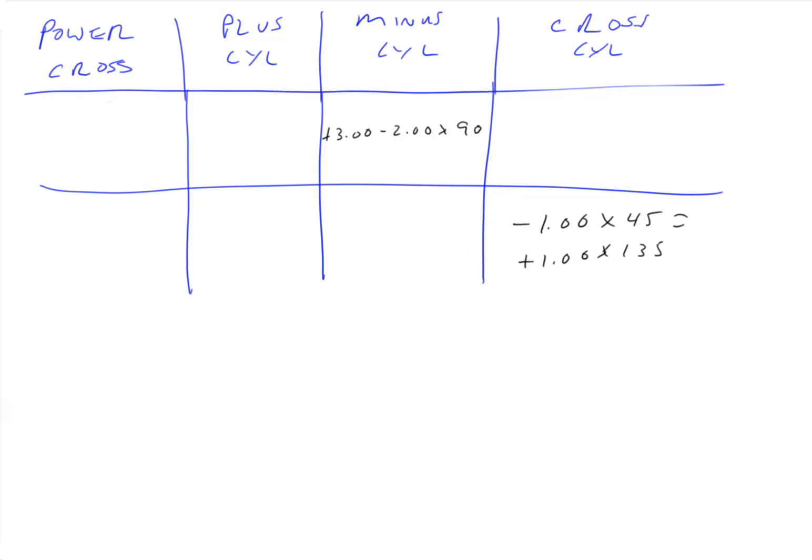Okay, so the top one, we'll get some scratch paper and draw these out. It keeps you from getting confused. So what we have here is we have a plus 3.00 sphere lens and a minus 2.00 cylinder lens axis 90.